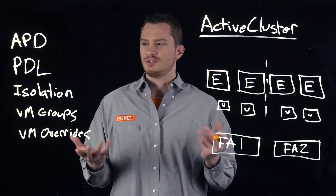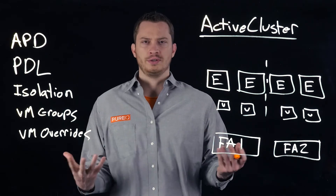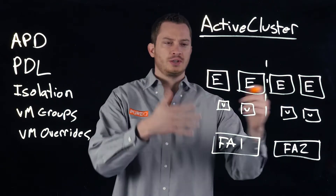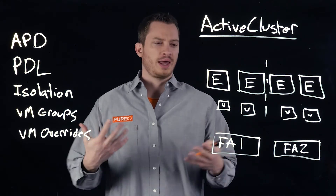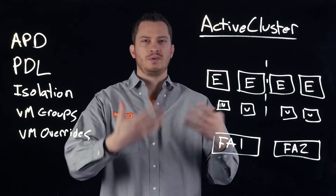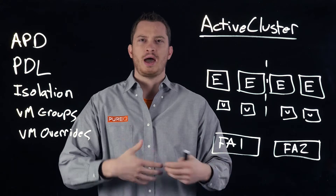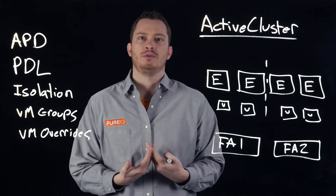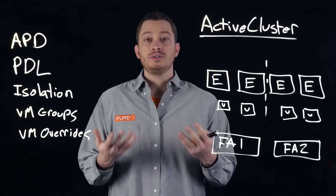The last topic we want to discuss is: we have ActiveCluster, we have a stretched ESX server cluster, but how does VM failover work? What happens if I lose part of my environment? How does VMware react? Do I need to manually involve myself in this process? The answer is no.